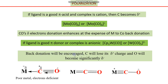Now, if back donation is encouraged, what type of characteristics will we observe in the complex? Carbon will lose its partial positive charge and oxygen will become significantly partial negative or electron rich. When back donation is encouraged — meaning metal is an electron-rich species — metal will donate electrons back to the carbon center, a double bond will form, and the partial positive character on carbon will decrease.